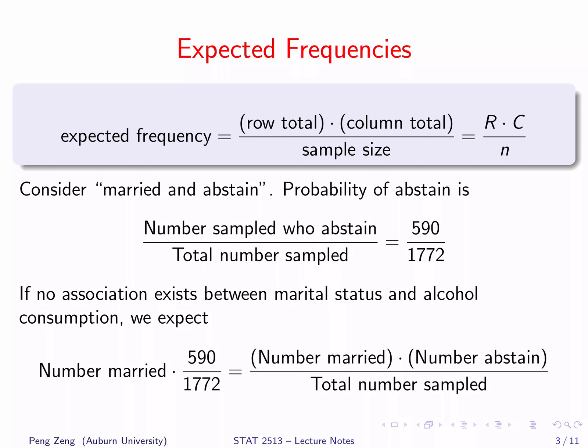We first list the formula to calculate the expected frequencies. It is the product of the row total and column total divided by the total sample size. Let's use an example to illustrate why this formula makes sense. Consider the cell married and abstain. A reasonable estimate of the probability of abstain is the sample proportion — the number of persons who abstain in the sample divided by the total sample size.